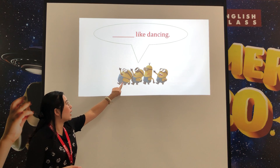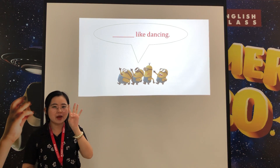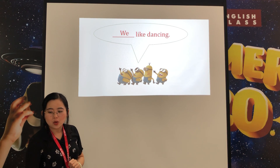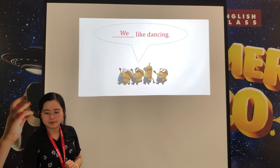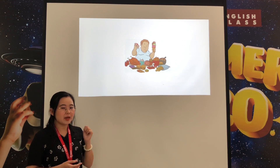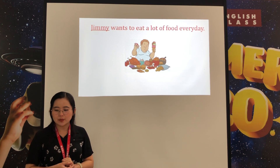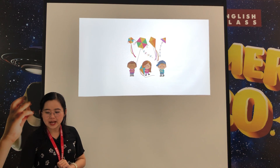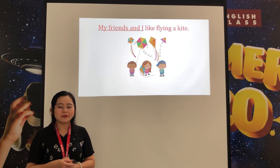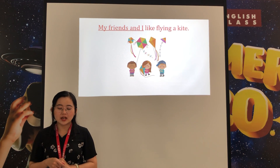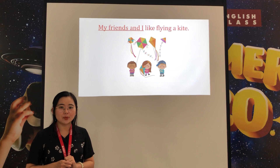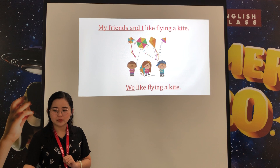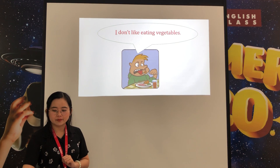Now we do it together. One, two, three, four — we have four people and this man is speaking. So we use the subject pronoun 'we.' 'We like dancing.' Next one — this is a man, so we can say: 'Jimmy wants to eat a lot of food every day.' Next: 'My friends and I like flying a kite.' So we use the subject pronoun 'we' — 'we like flying a kite.'